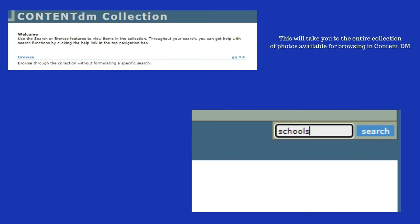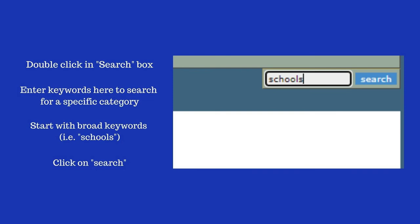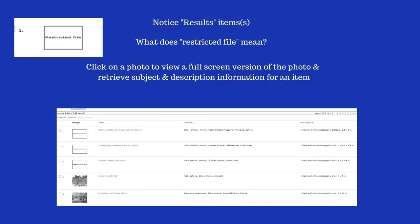Next we're going to try using the search box option, where you can refine your searches to specific keywords. This can be found in the upper right-hand side of the screen. Go ahead and type in the word "schools" and click on Search. You'll notice that it brought up a results list of photos that includes 159 items, and as you scroll down you'll see photos of some, but others show a square frame with the words "restricted file." Restricted files have specific copyright regulations, so they're not available for reproduction, but any that have thumbnails or small square photos you can click on to see a larger version of the photo and to get detailed descriptions.